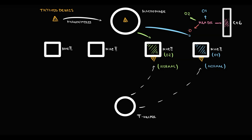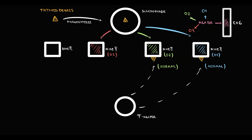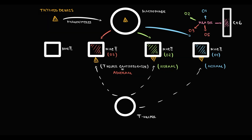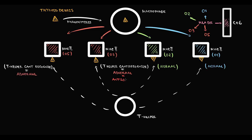But some people have the HLA-DR3 allele, producing an MHC2 receptor that does not know how to present thyroid debris to T-helpers properly. When T-helpers scan the abnormally presented debris, they cannot recognize it and therefore think it is an antigen. Similarly, people with the HLA-DR5 allele have an MHC2 receptor that also cannot present thyroid debris correctly, so T-helpers again mistake it for an antigen.